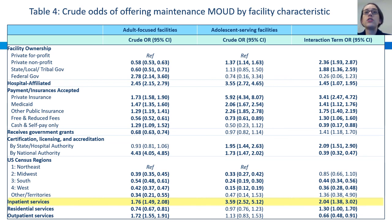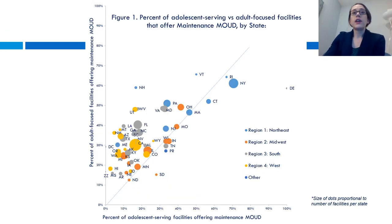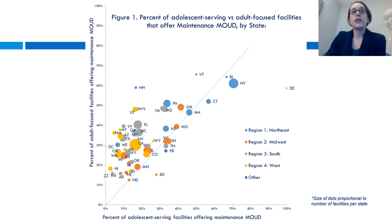In this figure we're looking at the percentage of facilities in individual states that offer maintenance medication, comparing adolescent-serving facilities on the x-axis and adult-focused facilities on the y-axis, with states color-coded by U.S. Census region. Most of the blue northeastern states are clustered in the top right quadrant with the highest percentage of both adolescent-serving and adult-focused facilities providing medications. Conversely, most of the orange Midwest states, gray southern states, and yellow western states fall above the line of symmetry, meaning a higher percent of their adult-focused facilities offer maintenance meds compared to the adolescent-serving facilities.